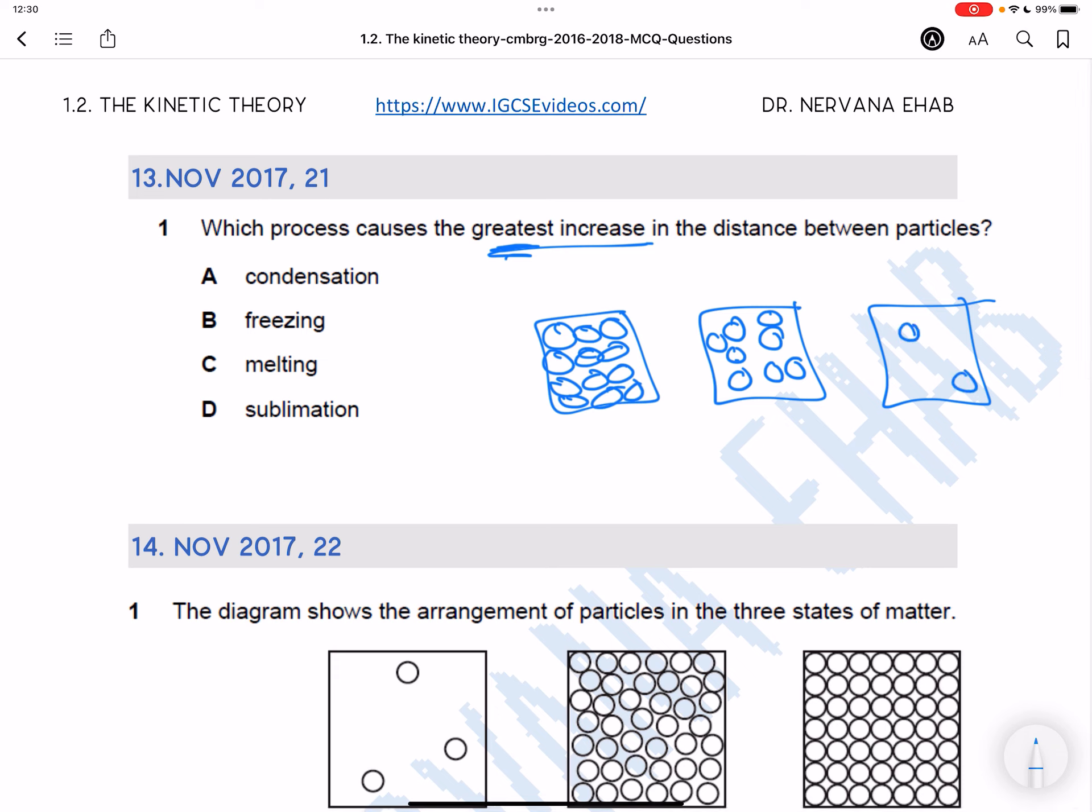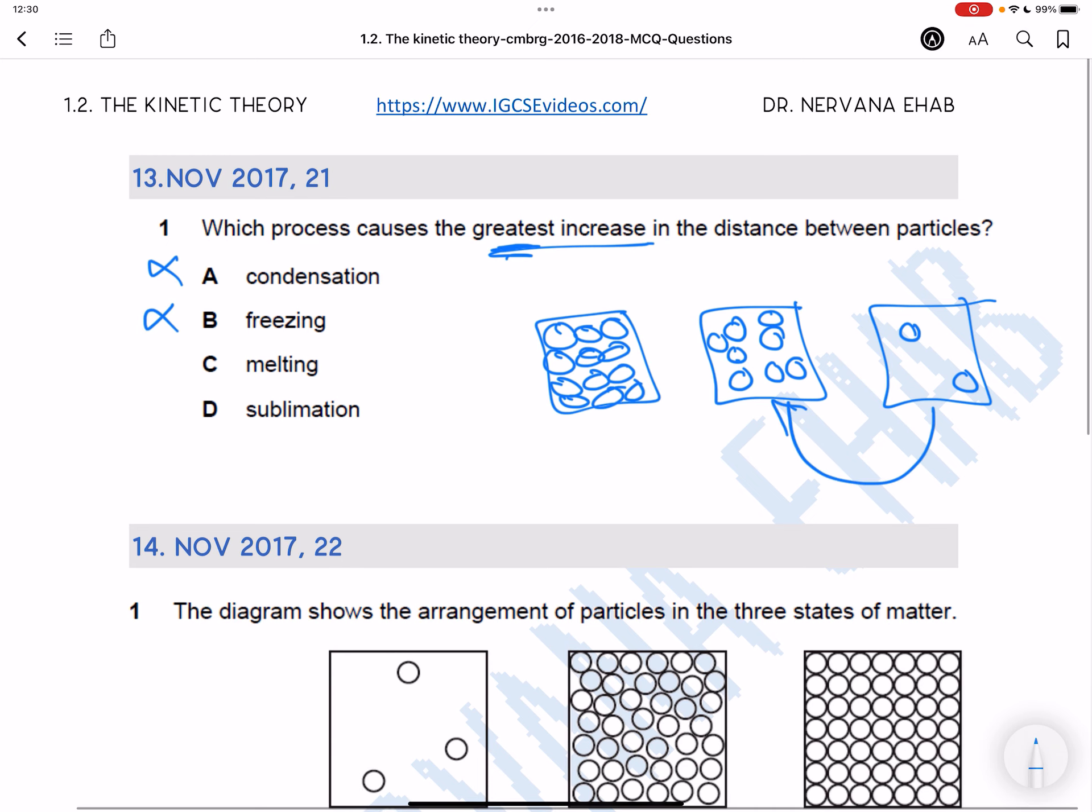Condensation and freezing are totally wrong because condensation is gas to liquid where particles are decreasing in distance and not increasing in distance. Freezing is liquid to solid, which is also decreasing in distance and not increasing in distance.